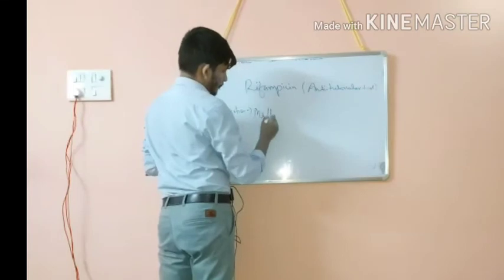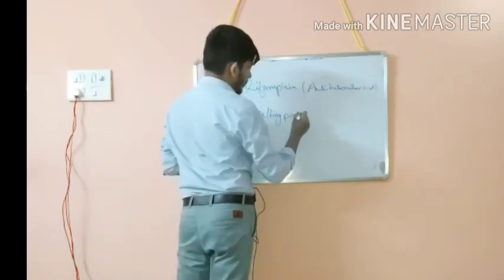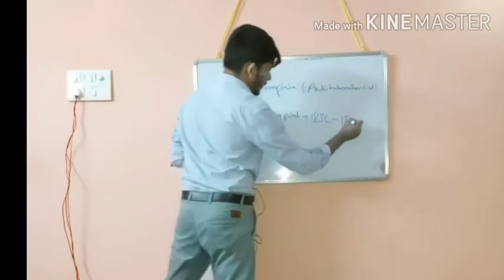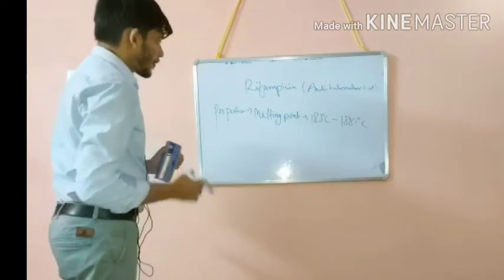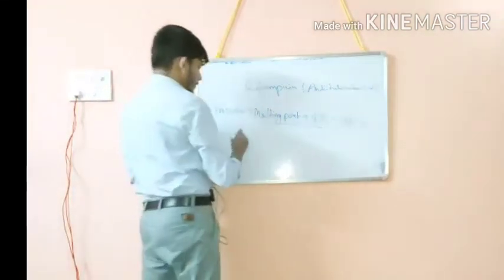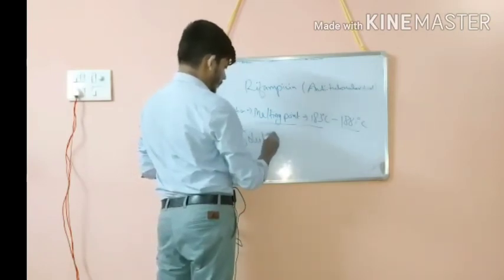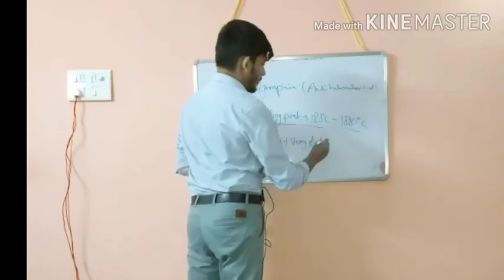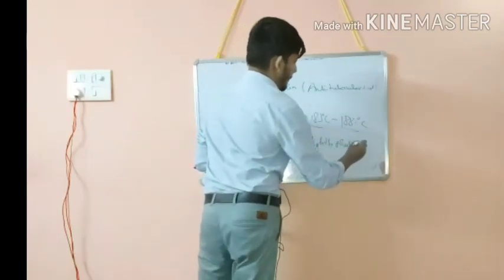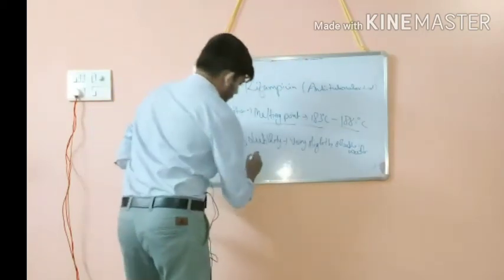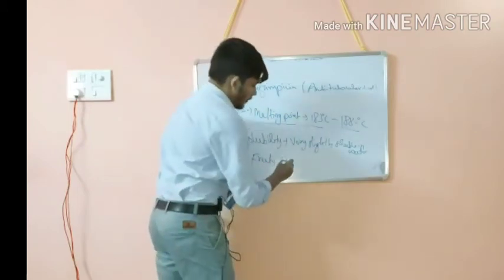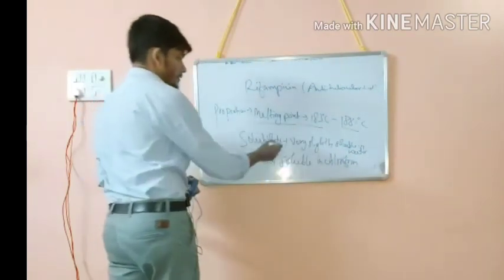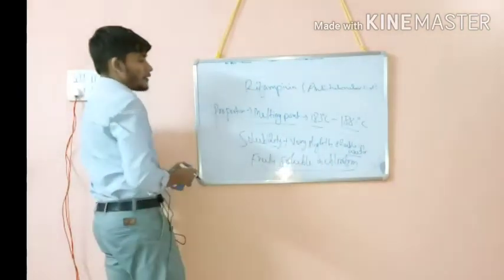Another important property of rifampicin is its melting point, which ranges from 183°C to 188°C. Regarding solubility, it is very slightly soluble in water, and it is freely soluble in chloroform.